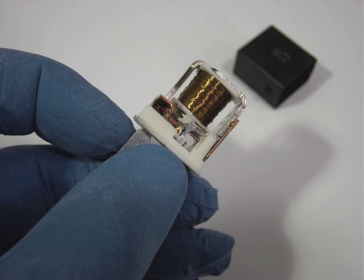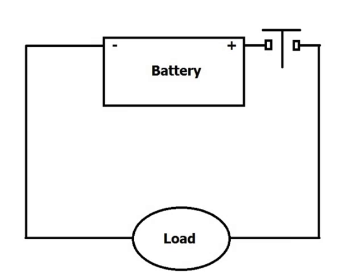Can you think of any others? All a control does is open the path, and that prevents electron movement — you have to have a complete path, remember. Since a control opens or closes the path, it can be installed anywhere in that path: either between the source and the load on the positive side of the circuit, or in the return path from the load back to the source, the ground side of the circuit.